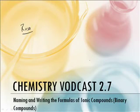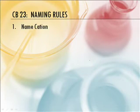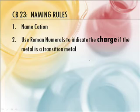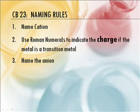When you're naming and writing formulas of compounds, the first thing you need to do is know the rules. There are several rules, and what you need to do is write them down. So push pause and write it down. You're back. Good. So you've written these things down — let's do some practice.